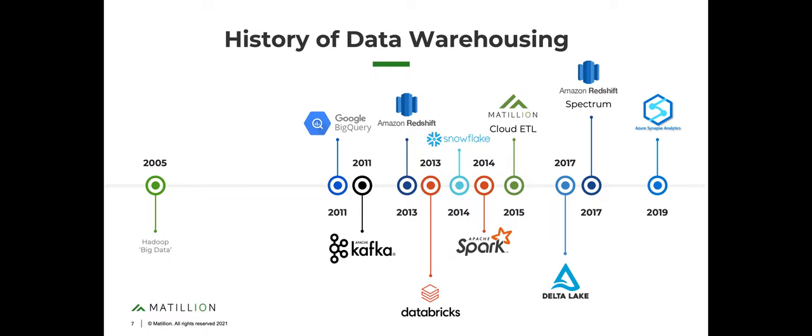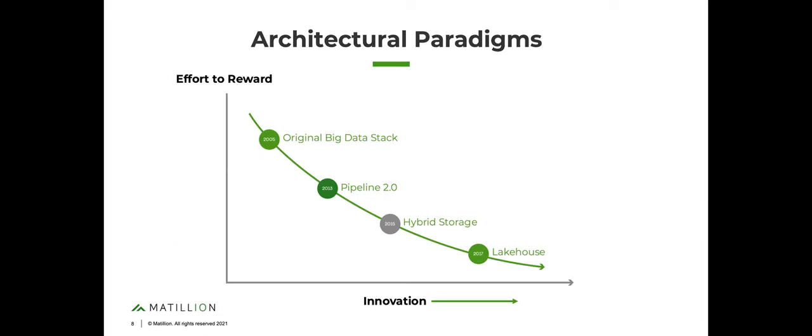If we do a zoom in on the last decade of cloud technology, things get even more interesting. We start to see things really heat up with technologies like Google BigQuery opening up in 2011, Kafka not too far behind, the open sourcing of Apache Spark, and Databricks being founded around that time. The effort-to-reward ratio has dropped dramatically as innovation has increased through each one of these architectural paradigms.